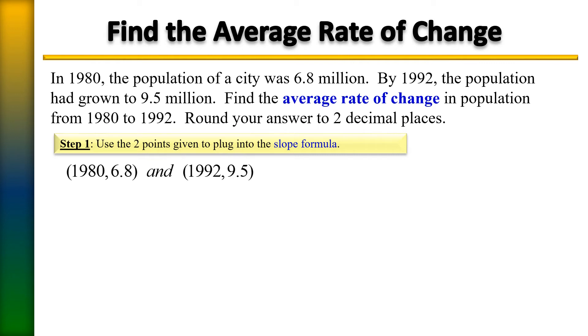We were given the data of 1980, it was 6.8, and in 1992, it was 9.5. Let's plug those values into the slope formula, which is y₂ minus y₁ over x₂ minus x₁.